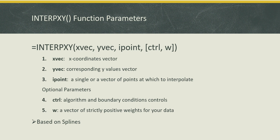Let's begin by introducing the function INTERPXY. INTERPXY takes three required parameters: the X vector coordinates in parameter number one, the corresponding Y values vector in parameter number two, and the interpolation point or points in parameter number three. It also takes two additional optional parameters, a set of key and values in parameter number four, which enables you to control the algorithm and improve your interpolation accuracy, and also a set of weights to weigh your data points in parameter number five.